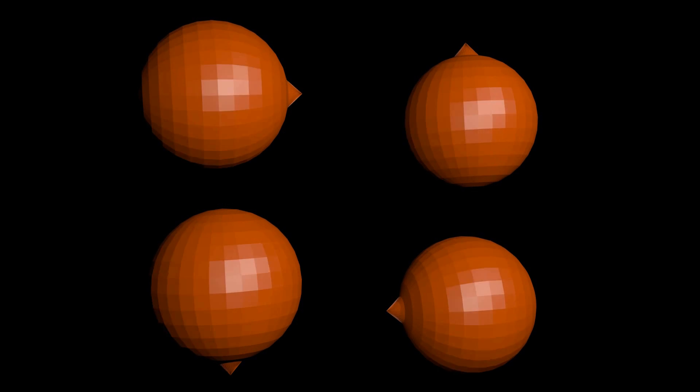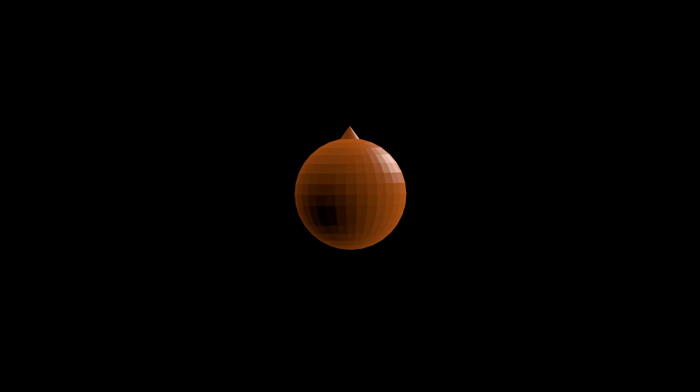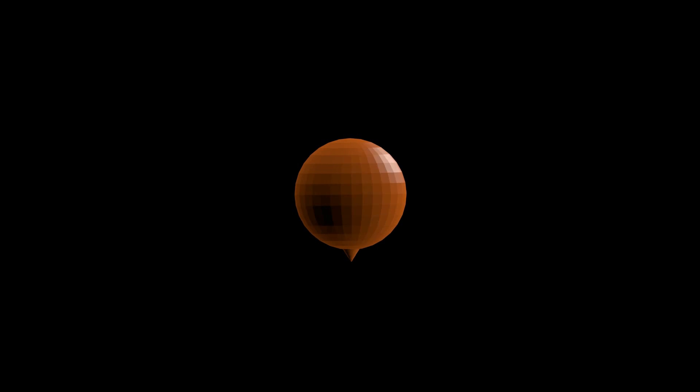We cannot find an electron's spin direction by simply looking at it — it is not visible. It can be identified by its behavior under the Stern-Gerlach apparatus, a device which has non-uniform magnetic fields inside. When an electron passes through this device, it is deflected upward or downward based on its spin direction. If deflected upward, we conclude it is a spin-up particle; if deflected downward, it is a spin-down particle.